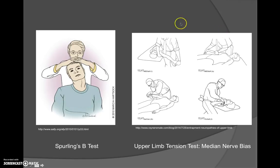The two key tests are the Sperling's and the upper limb tension test of the median nerve. For Sperling's B, have the patient seated and ask them to look toward their back pocket. If this elicits their pain, that is a positive test. If not, the therapist standing behind the patient will apply a compressive force through the top of the head and through the neck. If this elicits their familiar pain, that is a positive Sperling's B. Be sure to perform the test on both sides.